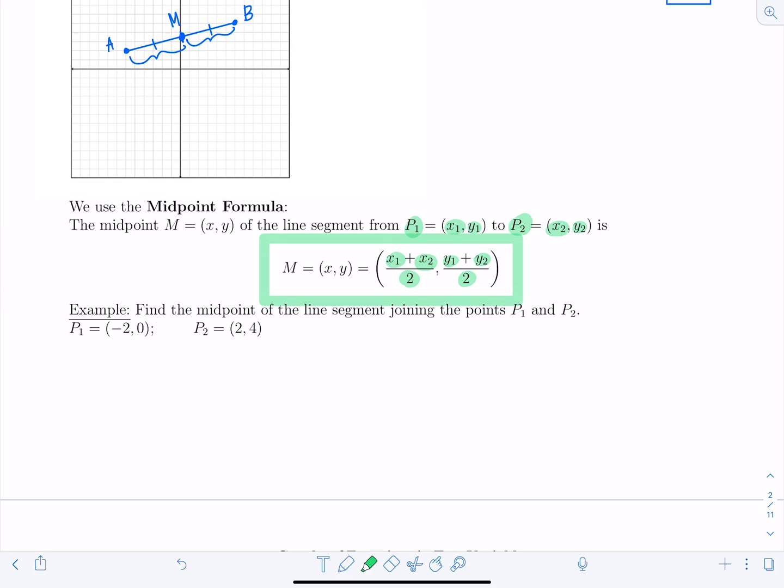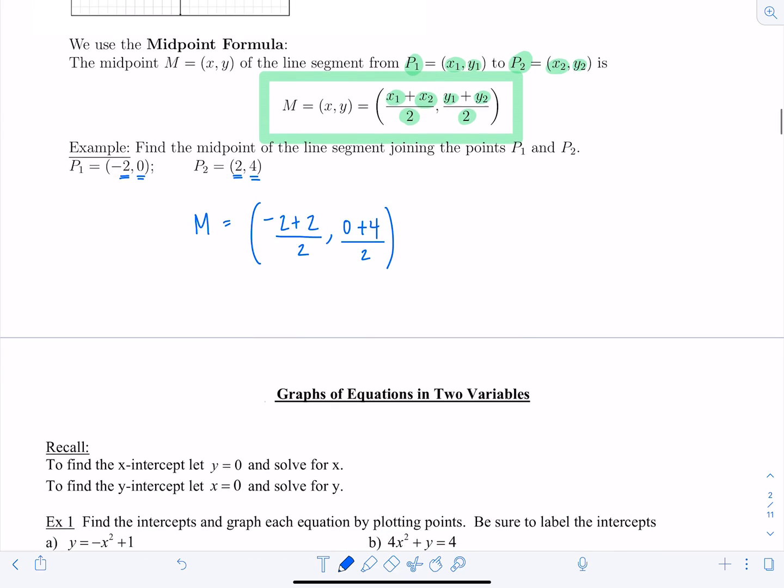So one quick example, and then that's it. So find the midpoint of the line segment joining the points P₁ and P₂. Now, in this case, the midpoint is another ordered pair, right? So the midpoint, its x coordinate I find by adding the two x coordinates together and then dividing by two. And then I do the same thing to find the y coordinate. So I take 0 + 4, divided by 2. Beautiful. And this is going to be -2 + 2, that's 0. 0 + 4, that's 2, divided by 2 is 2. Okay. And we're done.